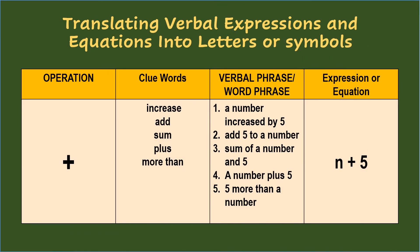When translating verbal expressions and equations into letters or symbols, you have to analyze the word phrase by looking for clue words that will lead to the right operation. Clue words for addition are: increase, add, sum, plus, and more than. Examples: a number increased by 5; add 5 to a number; sum of a number and 5; a number plus 5; 5 more than a number. You can use any letter for the word 'number.' Using the letter n, these phrases translate to the expression n plus 5.